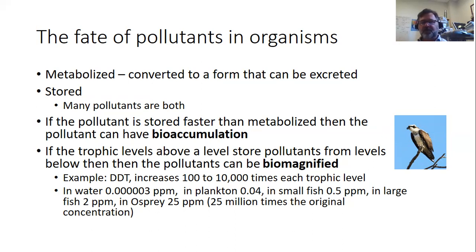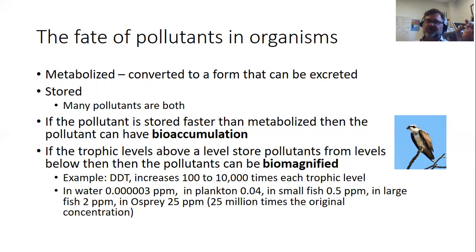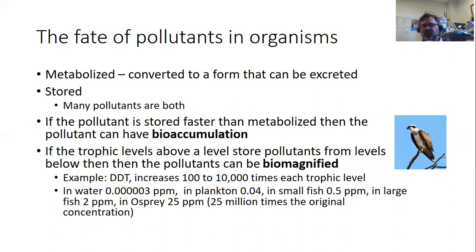There's also a phenomenon called biomagnification. The reason mercury is high in walleye is because it's eating smaller fish that have concentrated mercury as well. Those fish ate plankton and invertebrates that accumulated a little mercury. It builds up at each level — the levels below have lower concentration and the levels above have much, much higher concentration.